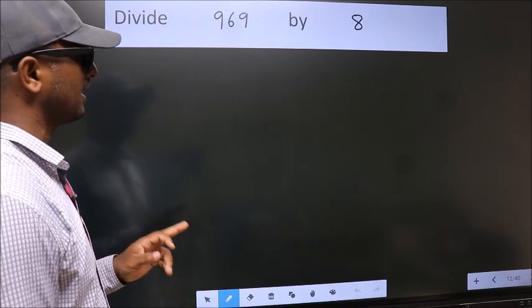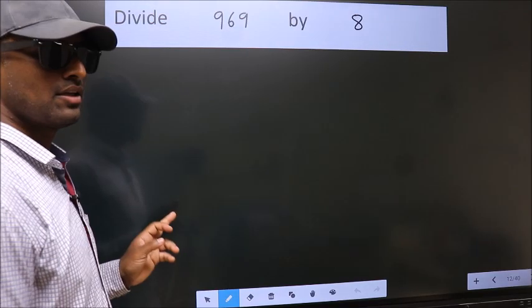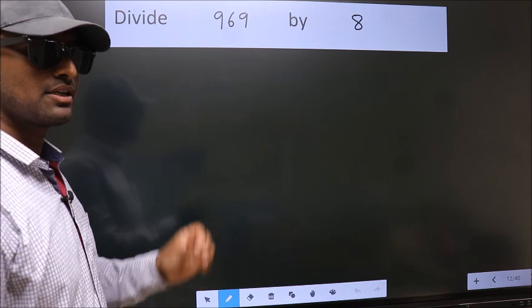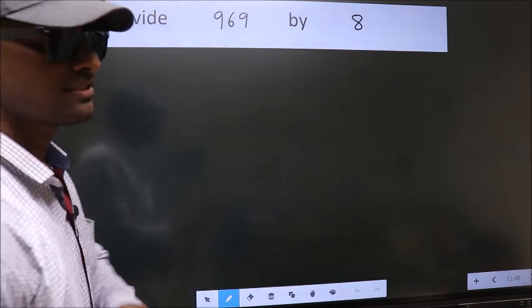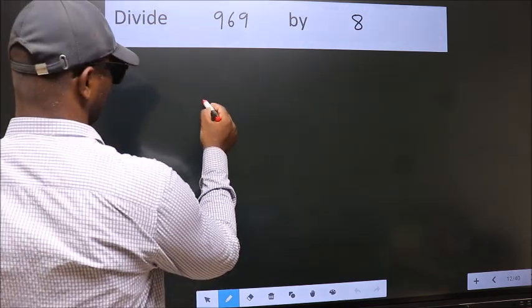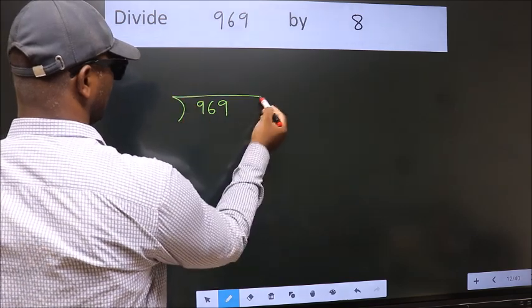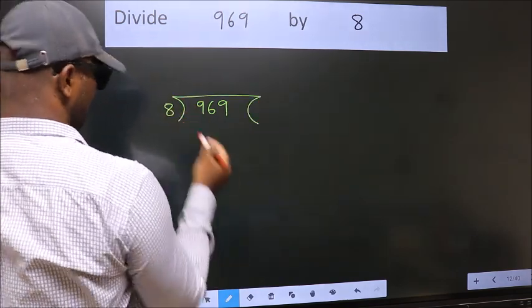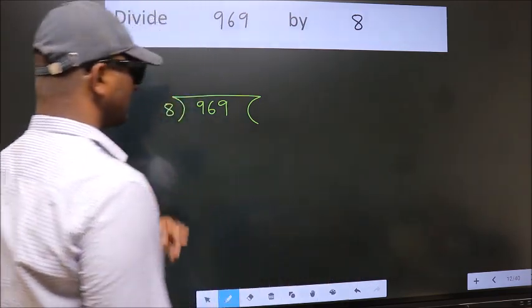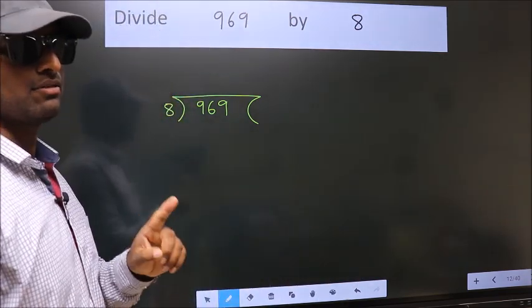Divide 969 by 8. To do this division, we should frame it in this way. 969 here, 8 here. This is your step 1.